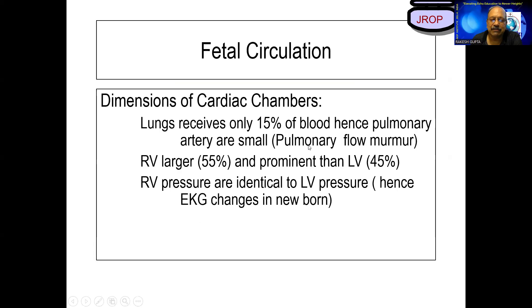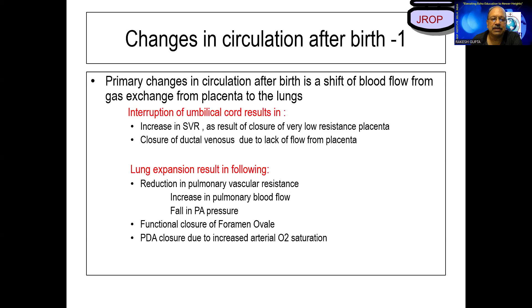That's why whenever a newborn is born, we are able to hear pulmonary flow murmurs. The RV and RA are larger than LV and LA, and RV pressures are almost equal to LV pressure. That's why we see RBBB-type changes in newborns.